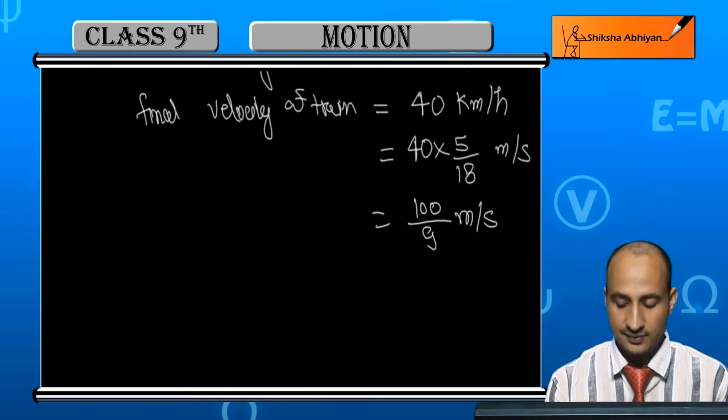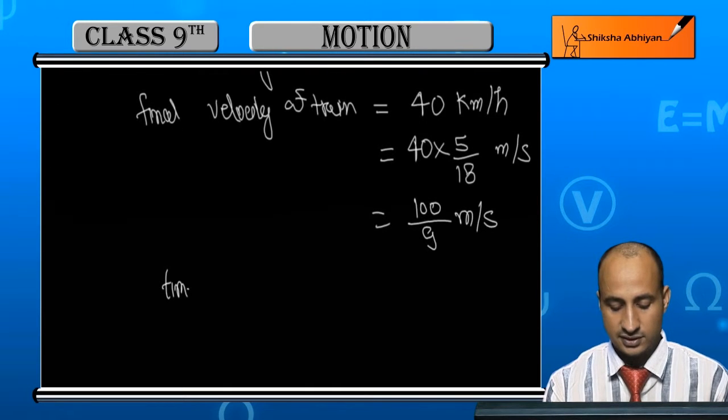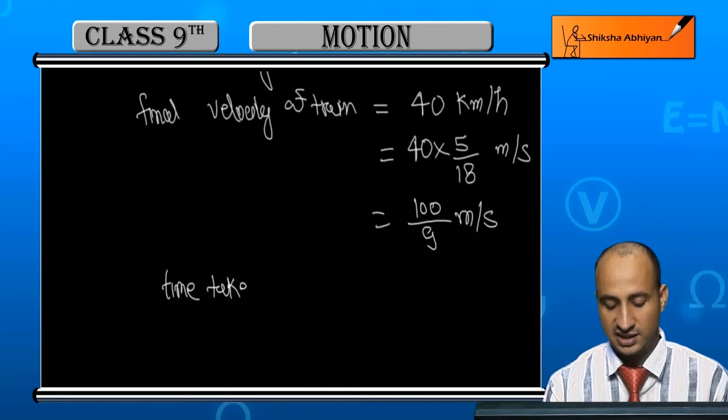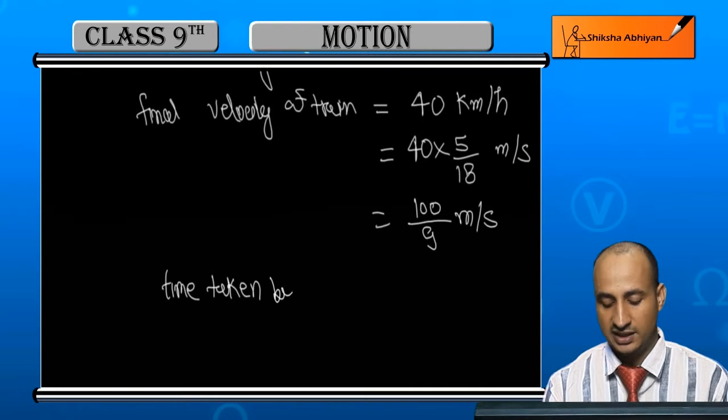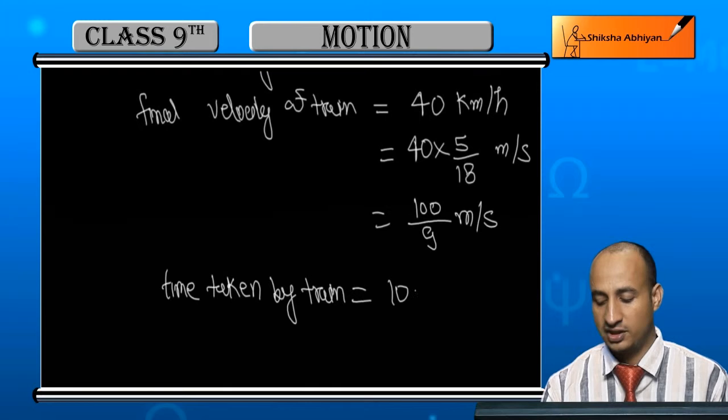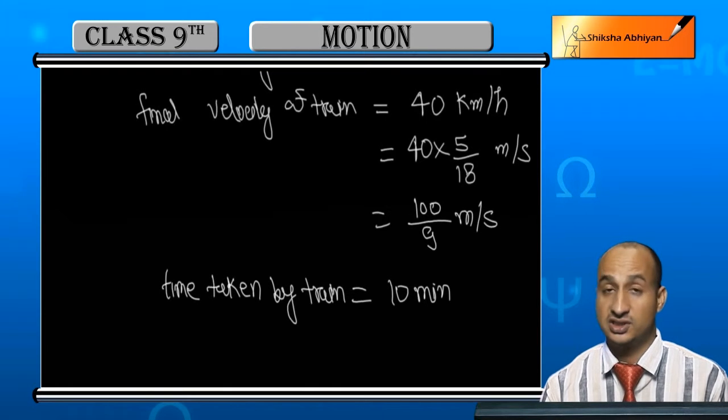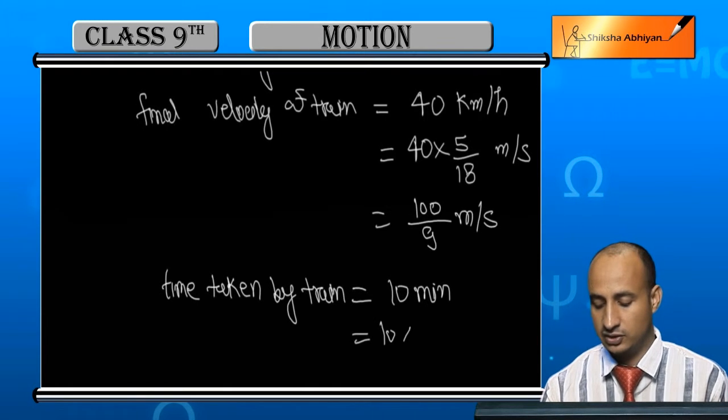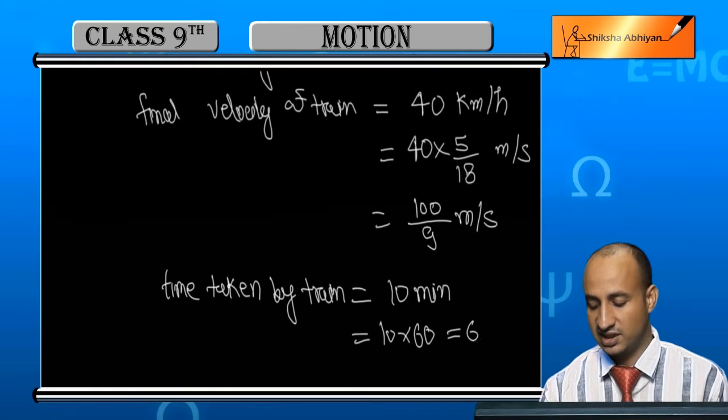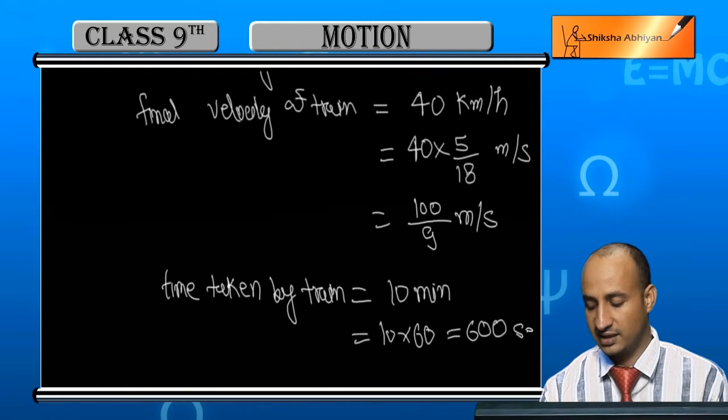Time, how much? Time taken by train is 10 minutes. When we are in seconds, because all the things are in seconds, so 10 into 60, that is 600 seconds.